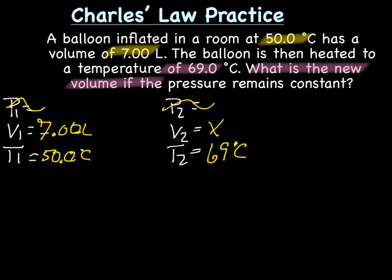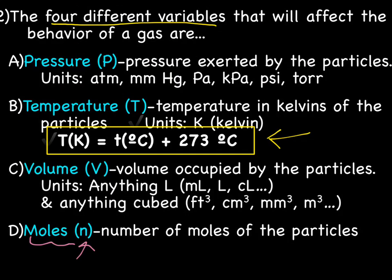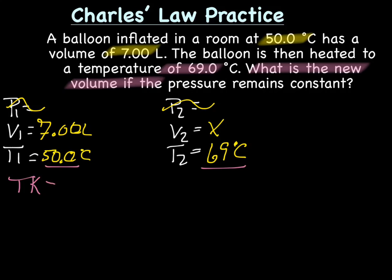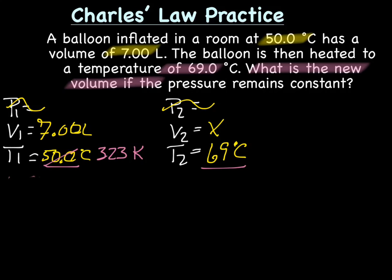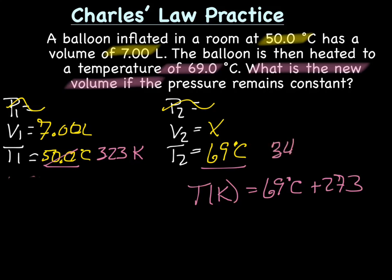There's one issue here — we have degrees Celsius, but temperature for gas laws must be in Kelvin. We need to use the equation: temperature in Kelvin equals temperature in Celsius plus 273. For T1: Kelvin equals 50.0 plus 273, giving us 323 Kelvin. We need to do the same for T2: Kelvin equals 69 plus 273, giving us 342 Kelvin.